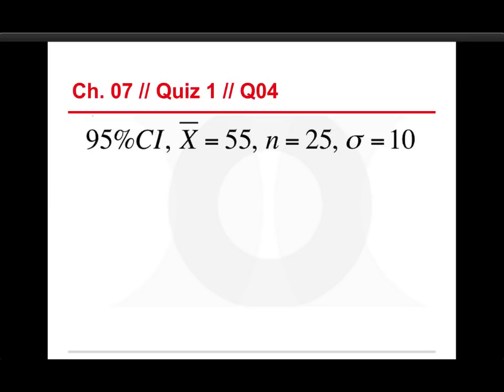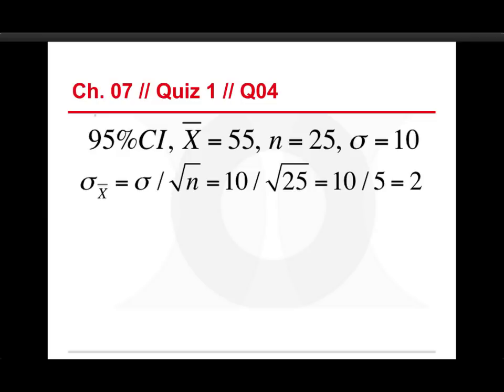First, it's helpful to write down what the actual parameters of the factors are that you're dealing with. So we want a 95% confidence interval. That's the CI on the left for confidence interval. We have a sample mean, x-bar of 55. We have a sample size of 25. And we have a population standard deviation of 10 for this particular form that we're using. The first thing you need to do is get the standard error. And so we have the standard error that sigma sub x-bar is equal to sigma, the population standard deviation, divided by the square root of the sample size, n. And so that gives us 10 over the square root of 25 is 10 over 5 and is 2. So that's the standard error. It's two points.